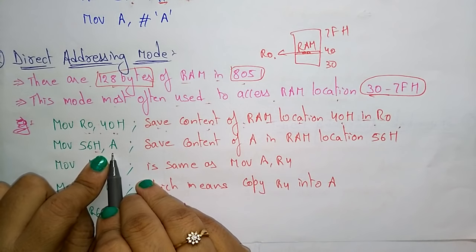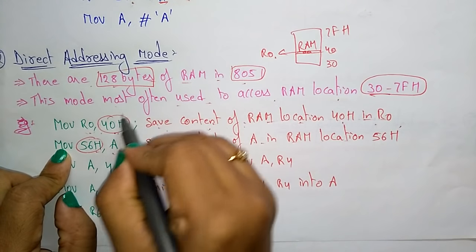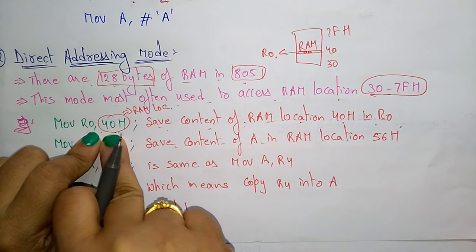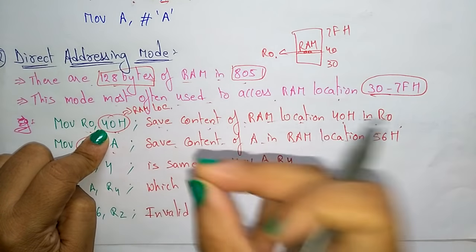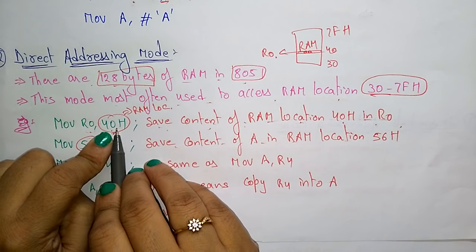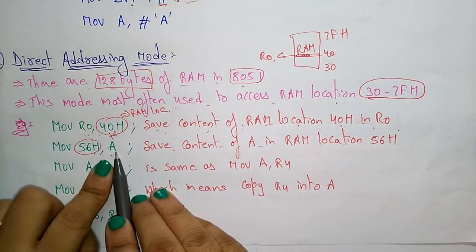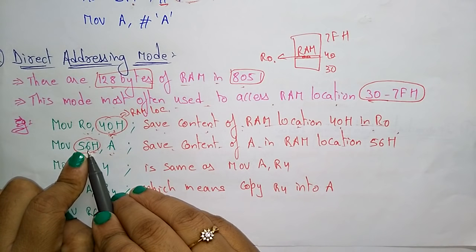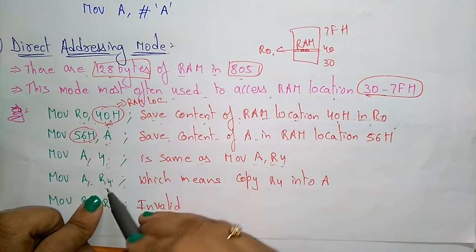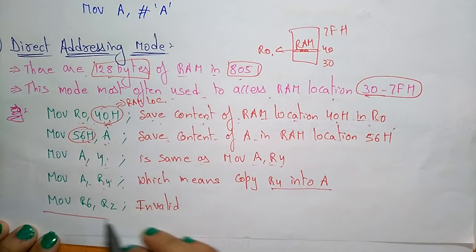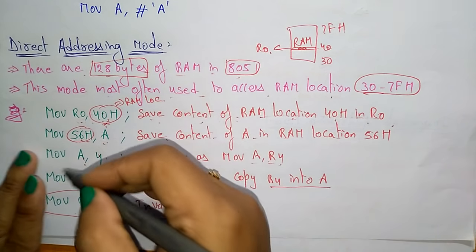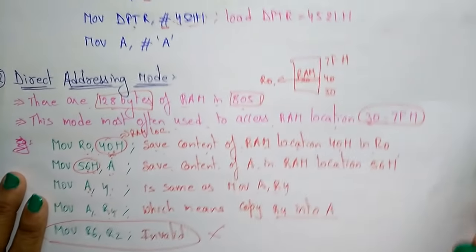MOV 56H, A saves the content of accumulator A into RAM location 56H. These addresses represent RAM locations — data memory, not program memory. If you write MOV A, R4, that is the same as MOV A, 4; both copy R4 into A. An instruction without specifying a valid RAM location or register would be invalid, because you must mention either the accumulator or one of the registers.